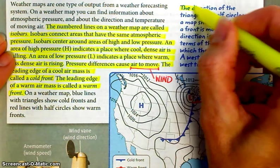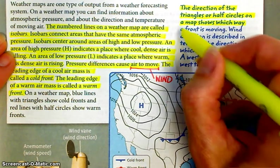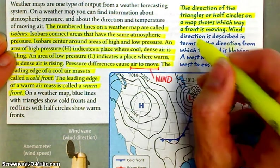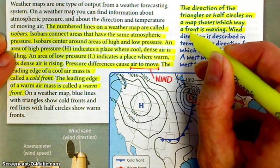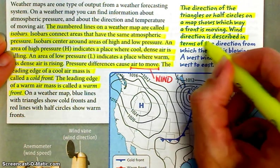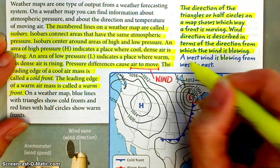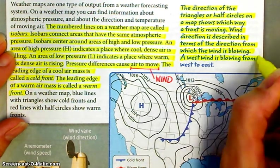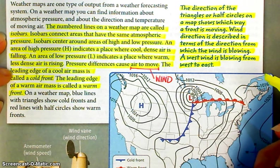Reminder, the direction of the triangles or half circles on a map shows which way a front is moving. Also, wind direction is described in terms of the direction from which it is blowing. So if we're talking about a north wind, it is blowing from the north. A west wind is blowing from the west to the east.